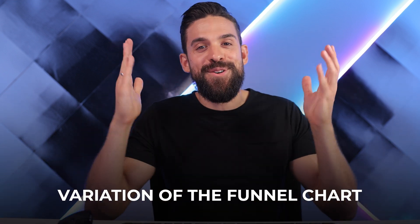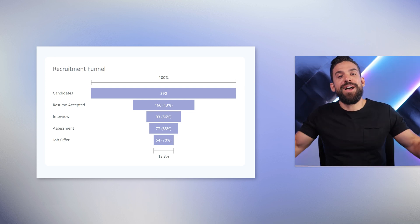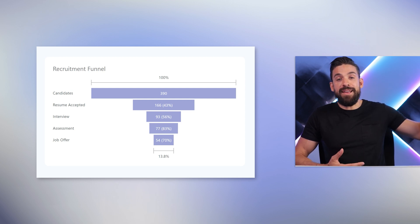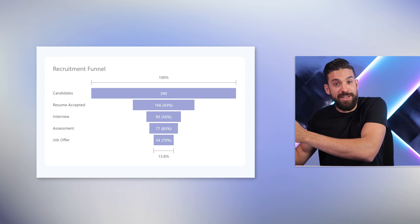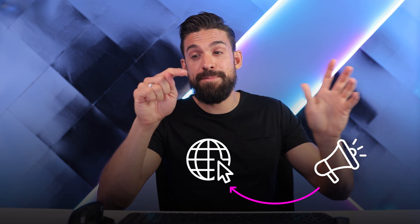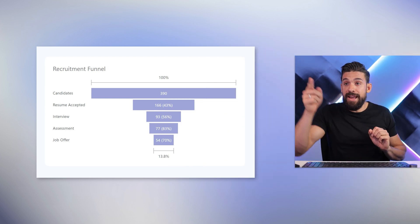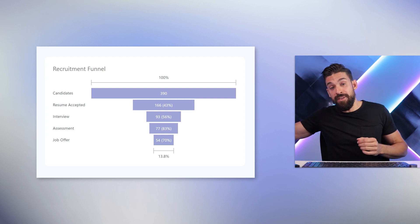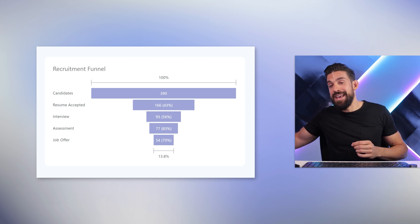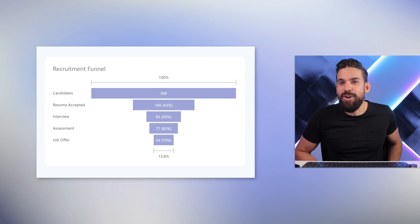That was visual number two. Let's now go to visual number three — a variation of the funnel chart. The standard funnel chart is great if you want to visualize how many inputs you have at the beginning stage versus the end stage and how it changes from one stage to the next. That could be a sales funnel — how many people saw your ads, went to the website, did an inquiry, booked a call, and ended up buying — or a recruiting funnel: how many candidates, resumes accepted, interviews, assessments, and job offers.